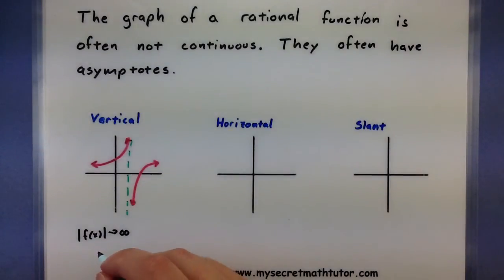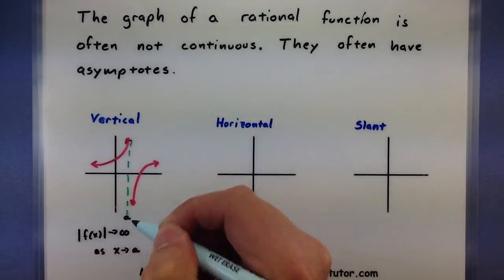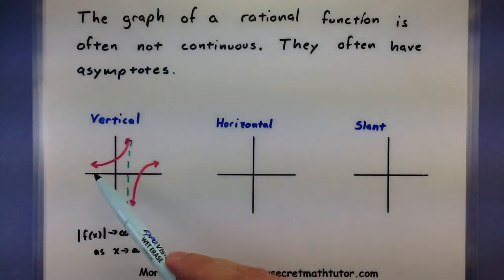And this happens as x approaches a value. So maybe this is the value a here. These could tend towards positive infinity or negative infinity, either one.